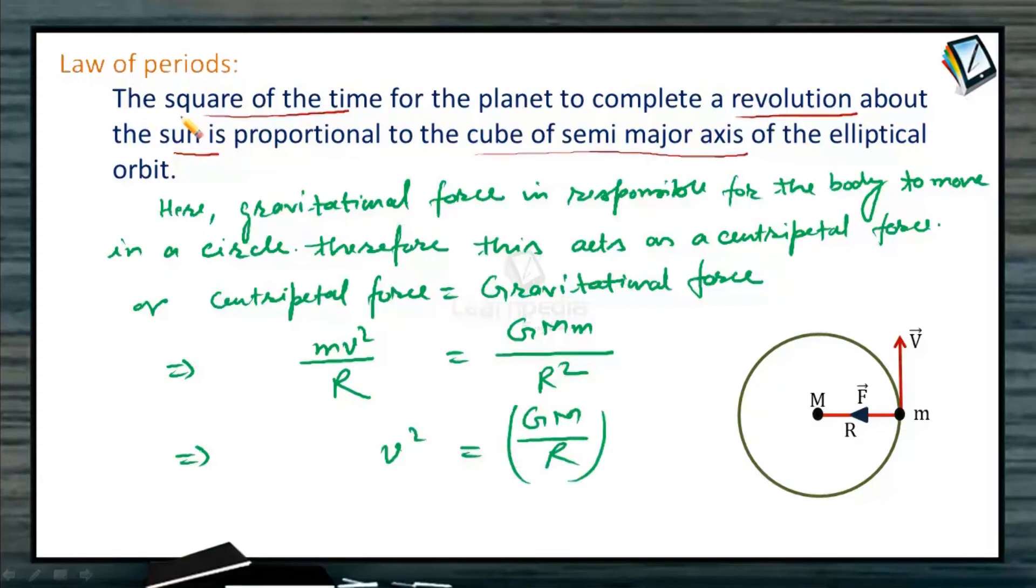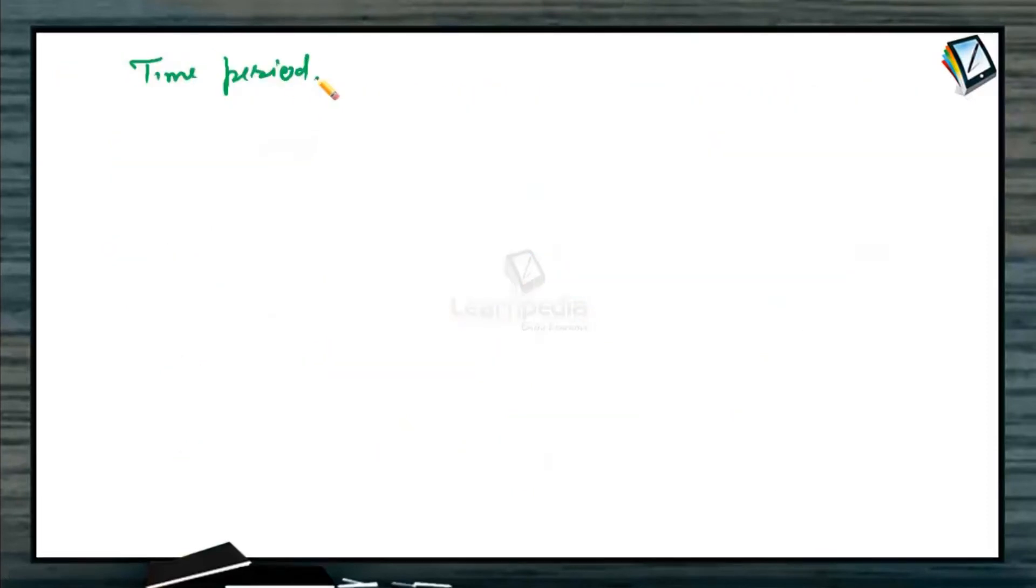Now, according to the law, we have to calculate the time. So, let us now look at the time period for a body to complete one revolution around the Sun. We can easily say that the time period will be given as the total distance covered upon speed of the satellite.